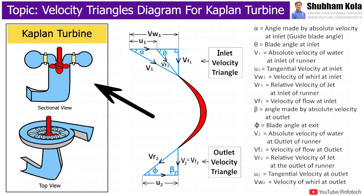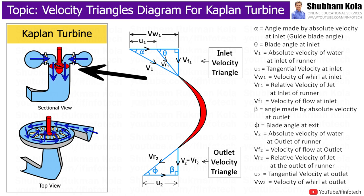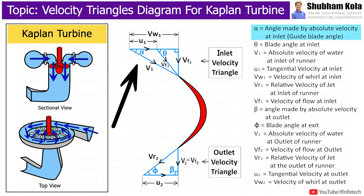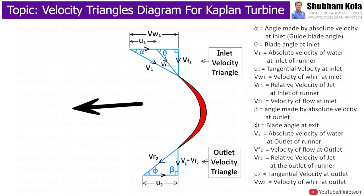The Kaplan turbine is an inward flow reaction turbine in which water from guide vanes comes with velocity V1 to the runner at a certain angle, and this angle is known as alpha. Here, D1 and D2 are the outer and inner diameters of the runner rotating at N rpm.